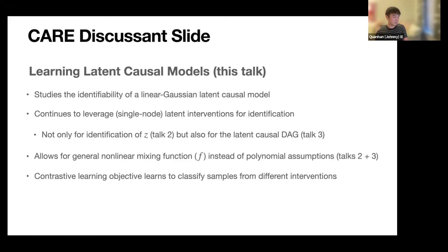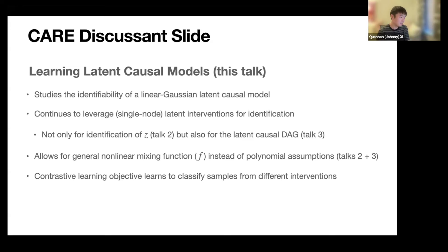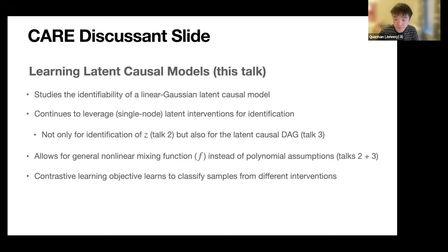I tried to implement this method while I was an intern with Jason on some bio data, but we ran into problems with how to test causal representation learning on real-world data — but that's a problem for another time. Even though the assumptions here seem different from the previous talk, the requirement of single node interventions covering all latent nodes shows up again. Results on the number and types of interventions needed for causal representation learning really do seem like they will be fundamental to the field.